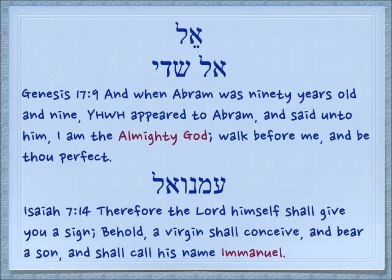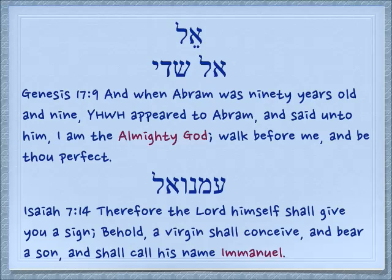Another word you're familiar with that has El in it is Immanuel. Isaiah 7:14 — 'Therefore, the Lord himself shall give you a sign. Behold, a virgin shall conceive and bear a son and shall call his name Immanuel.' Im, which is a pair we'll eventually cover, means 'with.' Anu means 'us' or 'we.' El means 'God.' Immanuel — God with us.